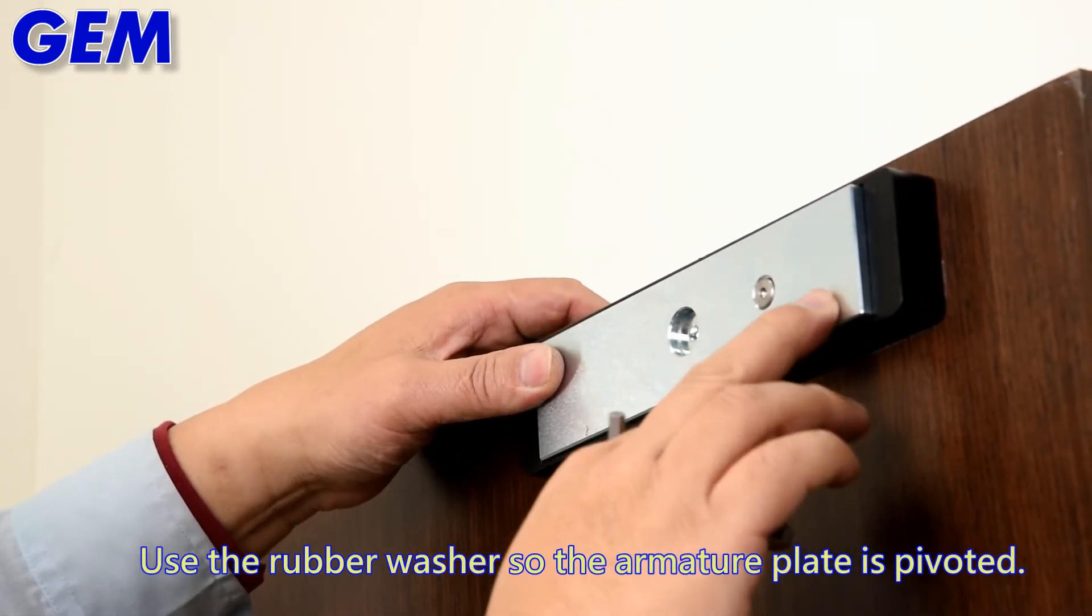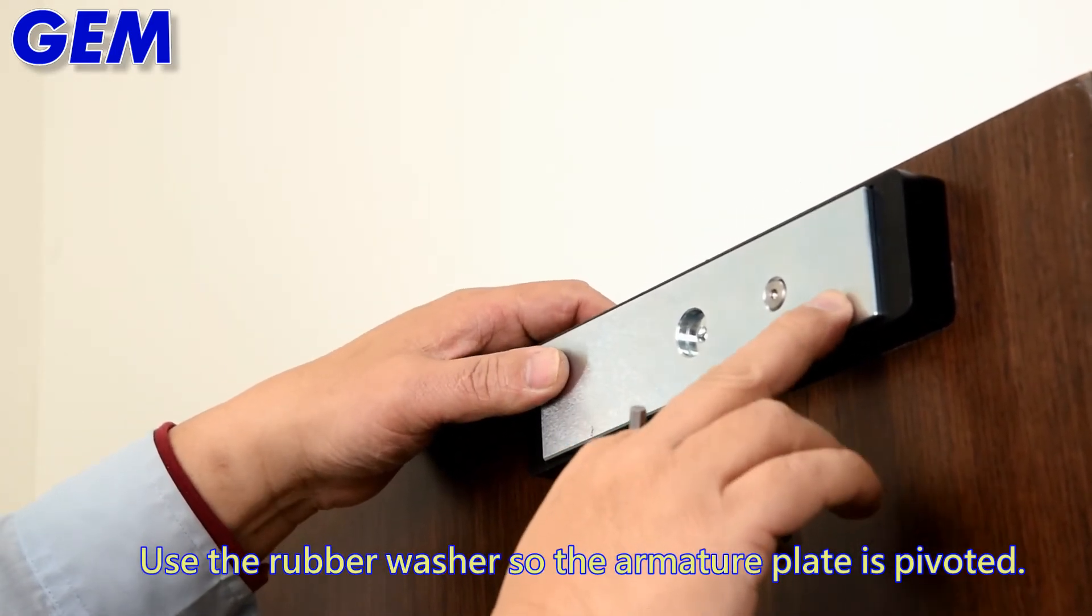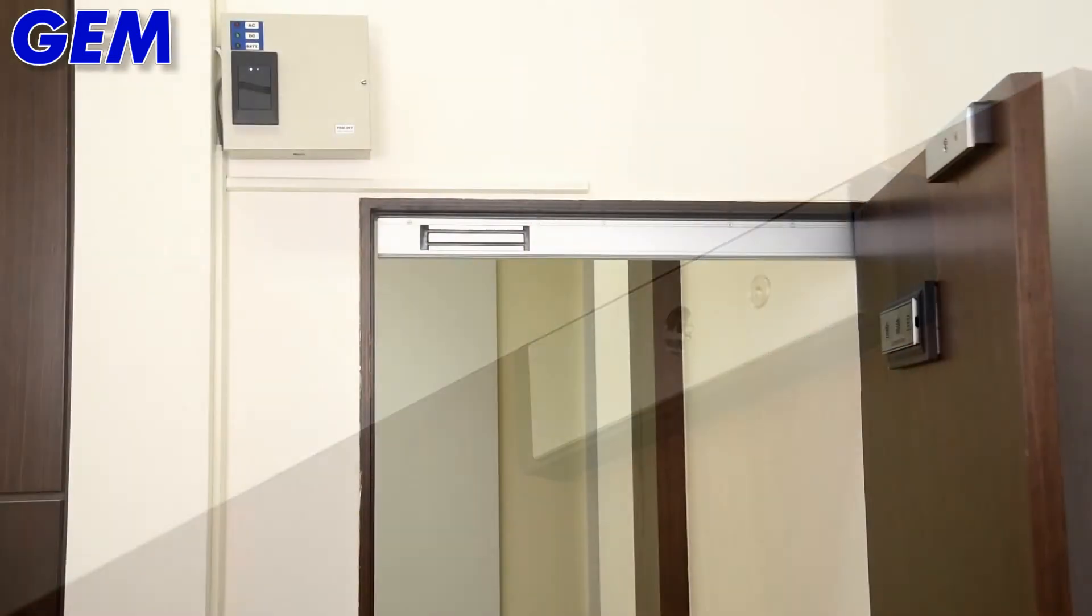Use the rubber washers so the armature plate is pivoted. Doors locked.